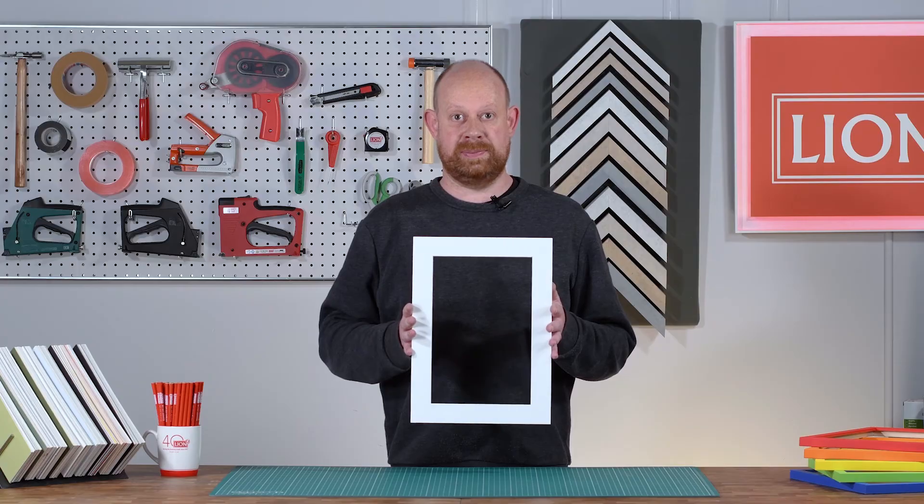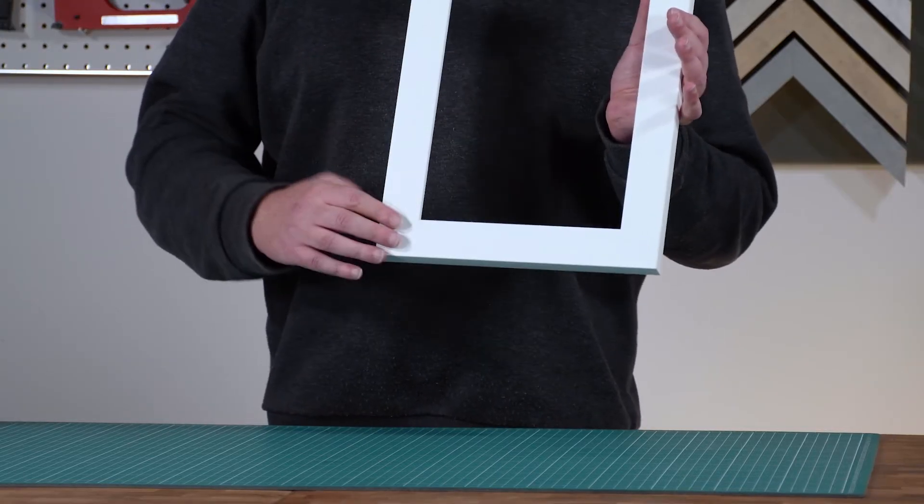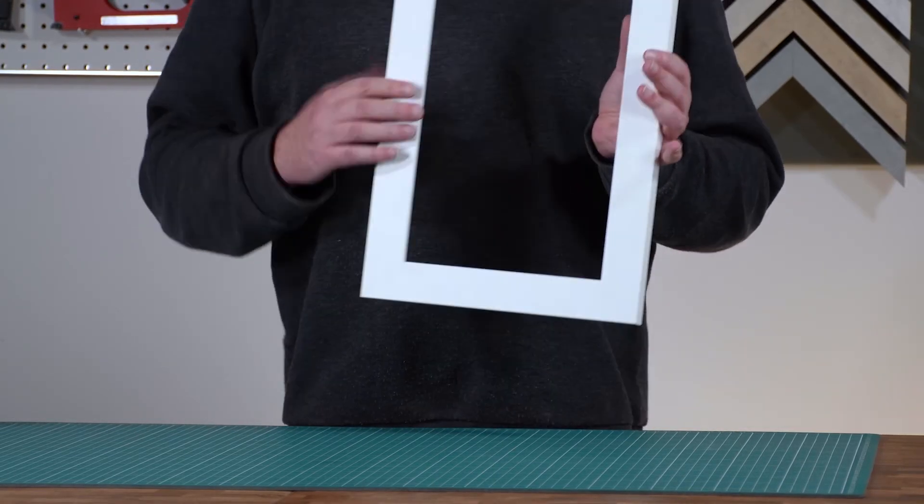And here's the finished frame. As you can see, the U200 provides a really tight joint on all four corners. For more info and to order, go to lionpick.co.uk.